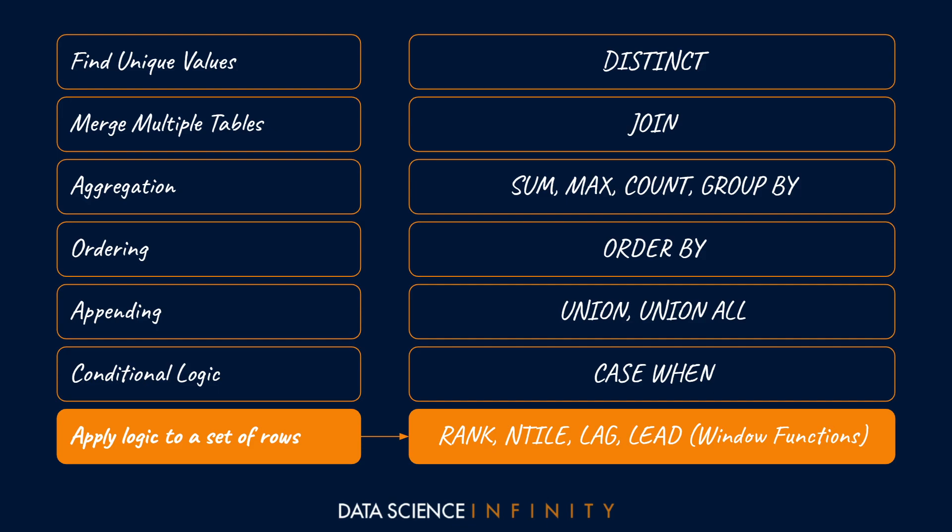We can also apply clever logic to sets of rows using window functions. For example, the LAG function lets us create a new column pulling a value from the previous row — so if we have a table of sales by week, we can calculate the week-on-week change in sales. The logic provided by window functions can be extremely powerful once you understand how it works. While there is much more to SQL, mastering what's been listed here would allow you to add serious business value.